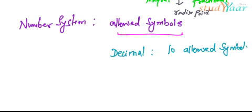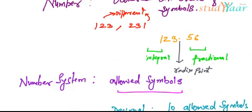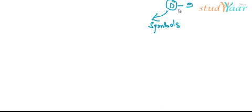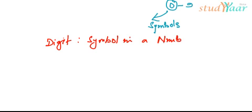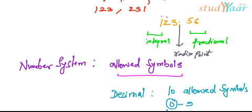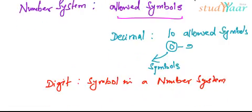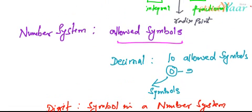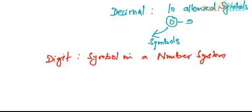So what are these 10 allowed symbols? These are 0 to 9: 0, 1, 2, 3, 4, 5, 6, 7, 8, 9. These are the symbols we use to form a number. A symbol in a number system is called a digit. So a digit is a symbol in a number system. We used 1, 2, 3, 5, 6, which are symbols, to form a number.